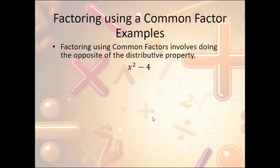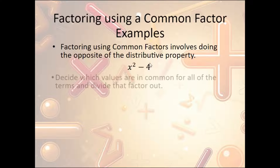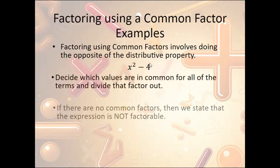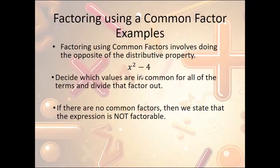Another example: x squared minus 4. We're looking for something in common. All we have is an x here and a constant here, so there's nothing in common. There's nothing we can factor out, so it's not factorable in this way. We just leave it as it is — this is its most factored form for now.